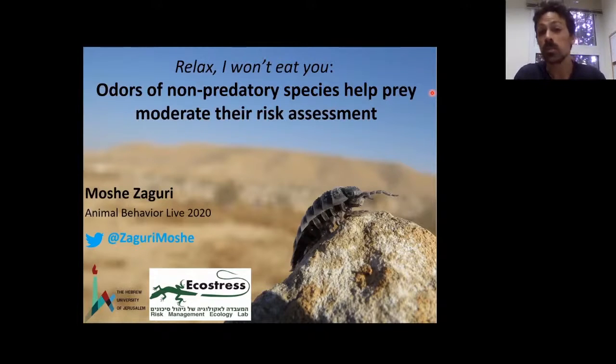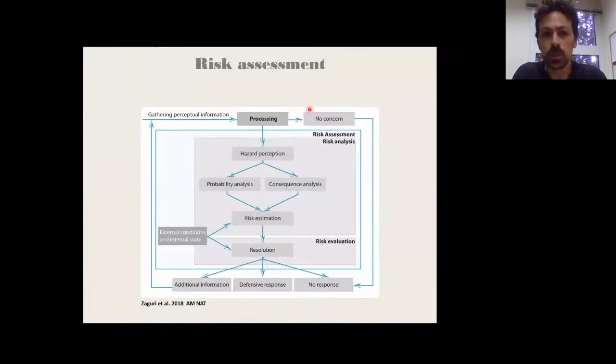Why do we immediately become more alert? Of course, we explain it by our use, just like prey animals, of the cues of non-predatory species for our risk assessment. Let us first start with what is risk assessment. This is a process that starts with the gathering of perceptual information, which is then followed by an internal cognitive process where the prey first estimates the risk level and then resolves what action should be taken, what is the most adequate defensive response.